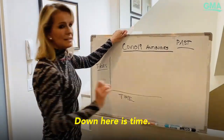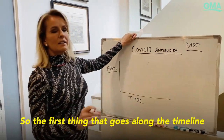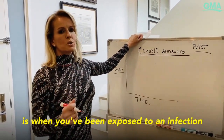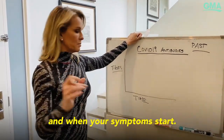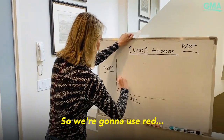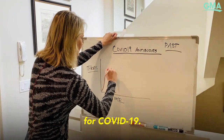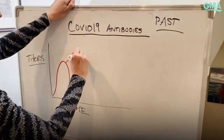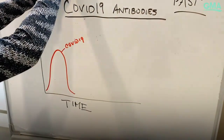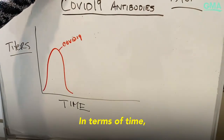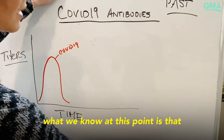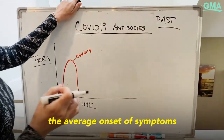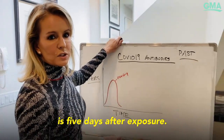Down here is time. The first thing that goes along the timeline is when you've been exposed to an infection and when your symptoms start. We're going to use red for COVID-19. In terms of time, what we know at this point is that the average onset of symptoms is five days after exposure.